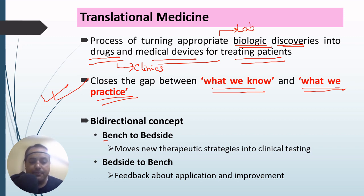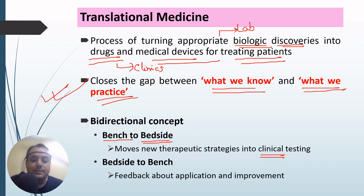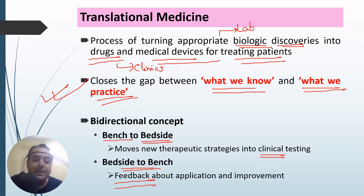Translational medicine is a bi-directional concept. The first direction is from bench to bedside, in which whatever we have learned in the laboratory through basic research is ultimately put into clinical research and clinical testing. The second direction is from bedside to the bench — we take feedback from clinical testing. So there is a bi-directional flow of information both from bench to bedside and from bedside to bench.